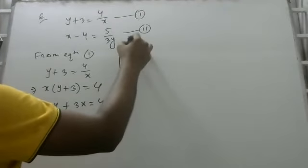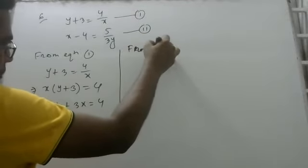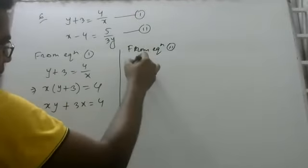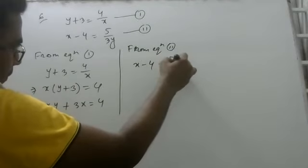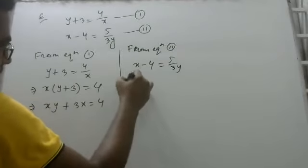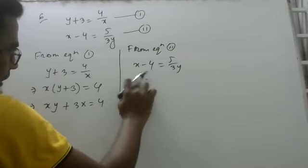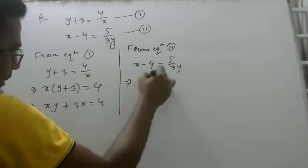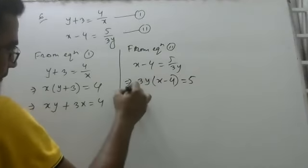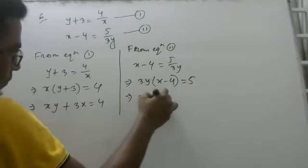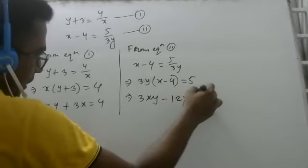From equation 2, x minus 4 is equal to 5 by 3y. So 3y into x minus 4 is equal to 5, which gives us 3xy minus 12y is equal to 5.